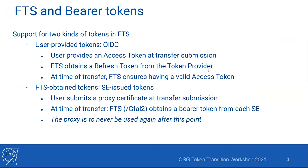FTS supports two kinds of tokens. The first are user-provided tokens — OIDC tokens — where the user provides an access token at submission. FTS reads it, contacts the token provider, and obtains a refresh token. FTS has to ensure that at the time of transfer it has a valid access token. The other kind are tokens that FTS obtains itself — what I call storage element issued tokens, also known as macaroon tokens. The user submits with a proxy certificate. FTS, when it starts the transfer, contacts the source and destination storage, obtains a macaroon token from them. In the ideal story, the proxy is to be forgotten at that point.